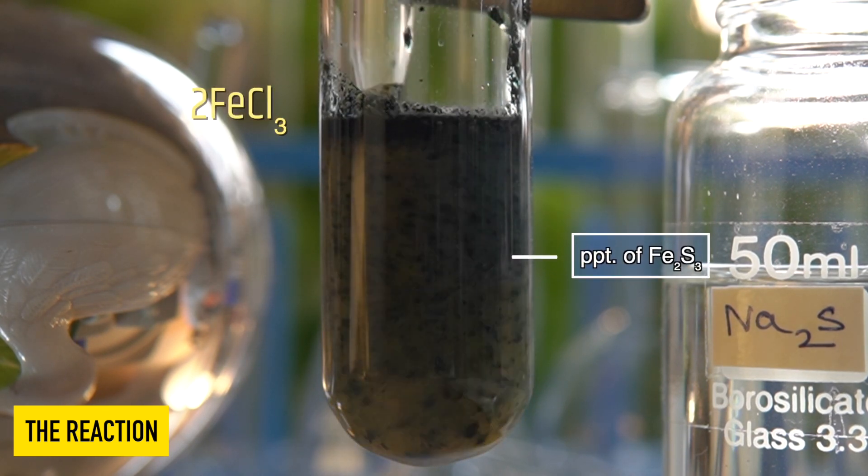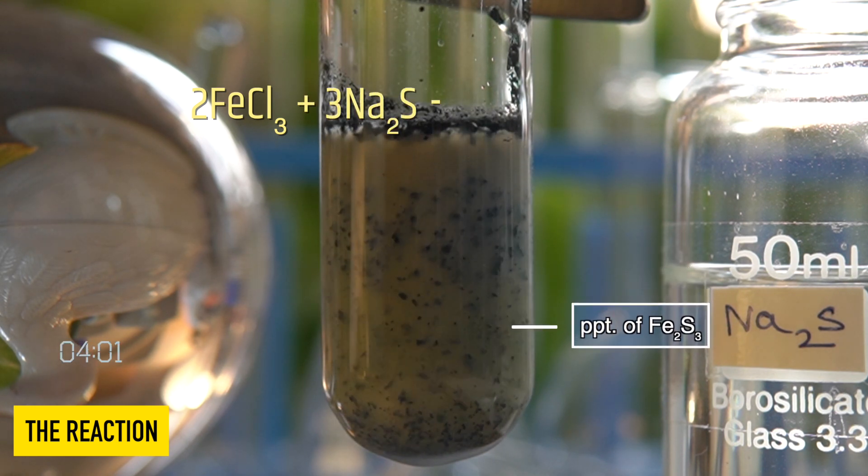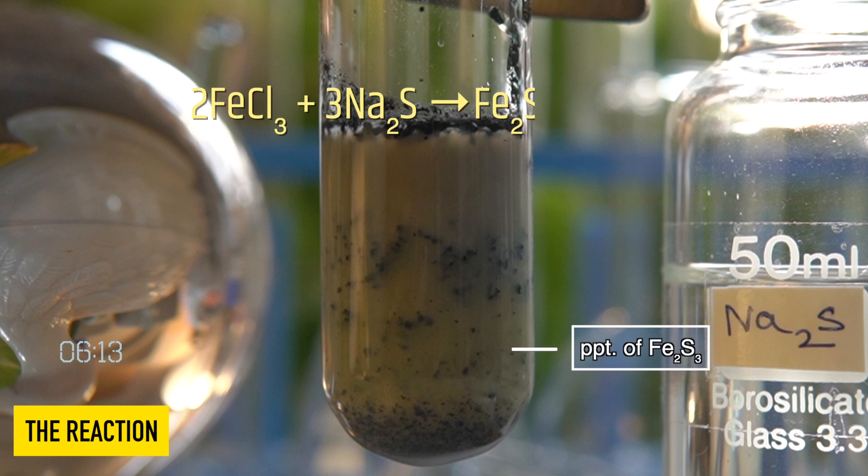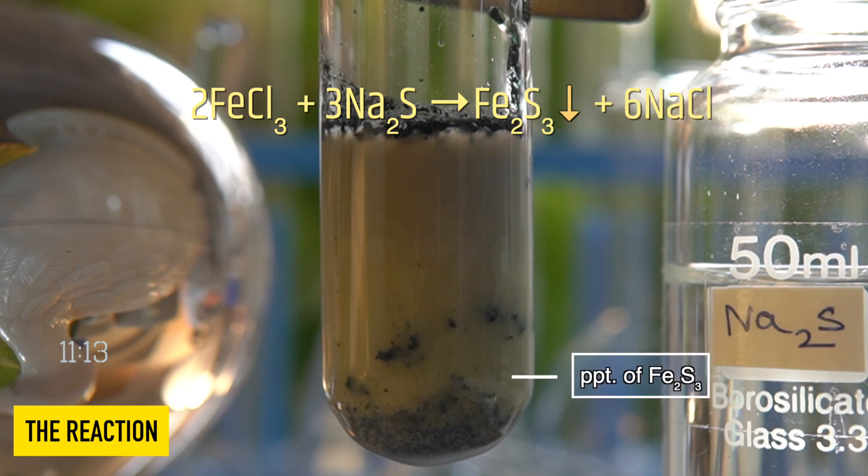So in this reaction, iron 3 chloride reacts with sodium sulfide to produce an insoluble black precipitate of iron 3 sulfide along with sodium chloride.